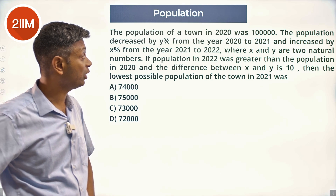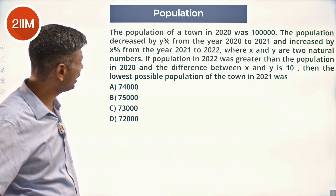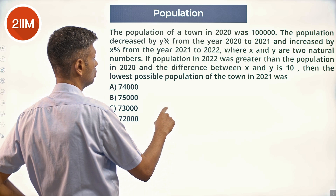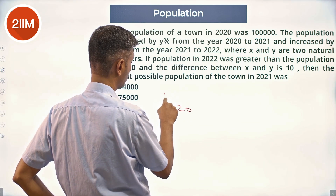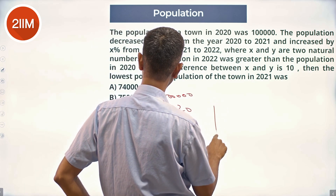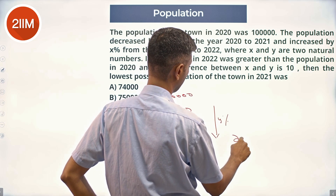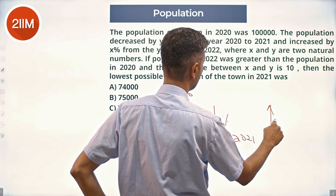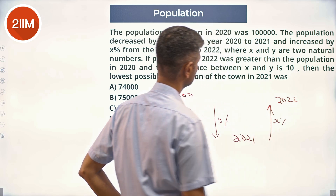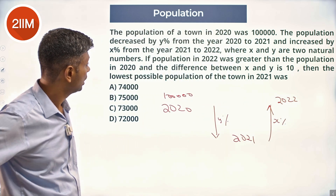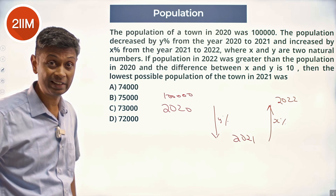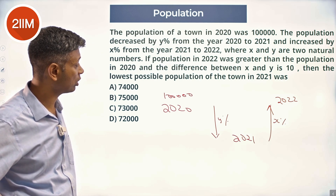The population of a town in 2020 was 100,000. The population decreased by y percent from 2020 to 2021 and increased by x percent from 2021 to 2022, where x and y are two natural numbers. The population in 2022 was greater than the population in 2020, and the difference between x and y is 10. Then what is the lowest possible population of the town in 2021?